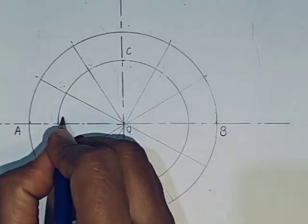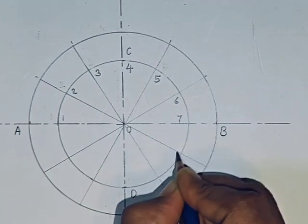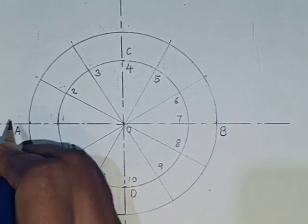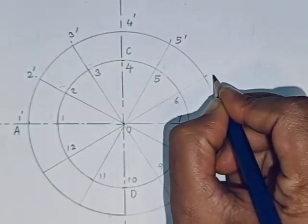Mark inner circle parts as 1, 2, 3 up to 12, and the outer circle parts as 1 dash, 2 dash, 3 dash, 4 dash up to 12 dash.